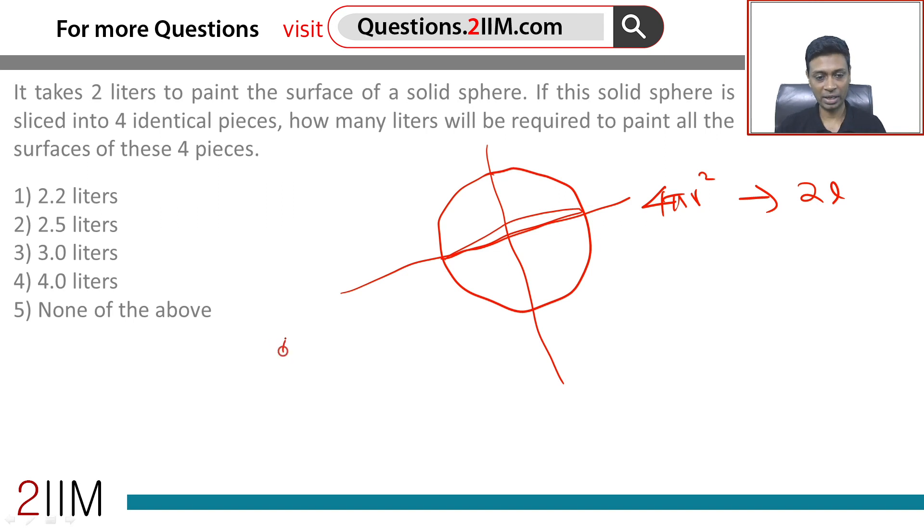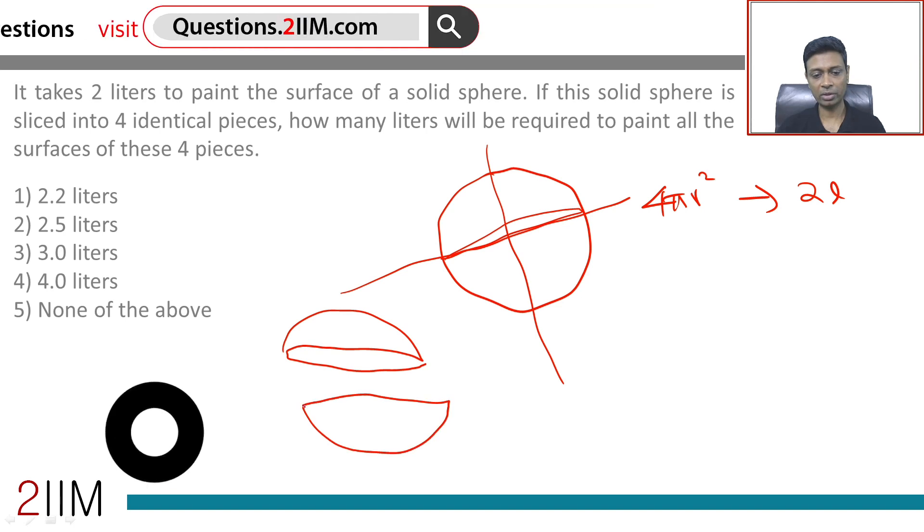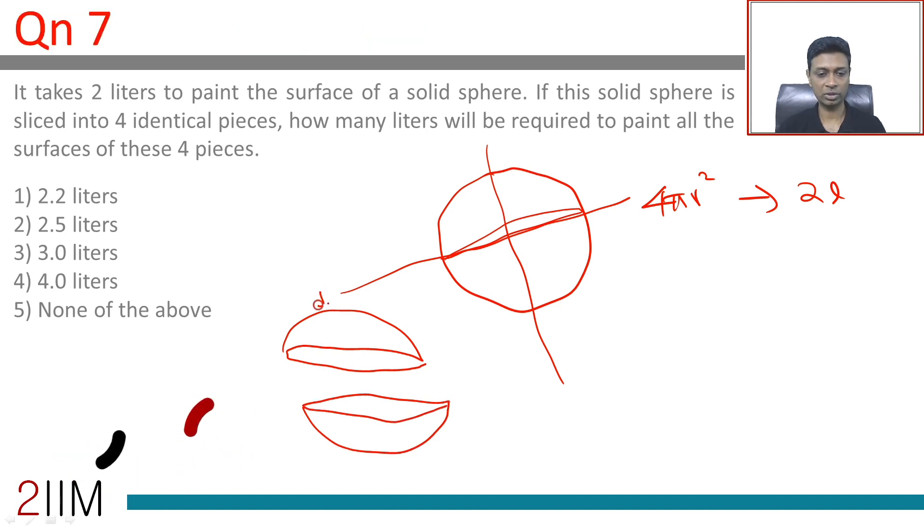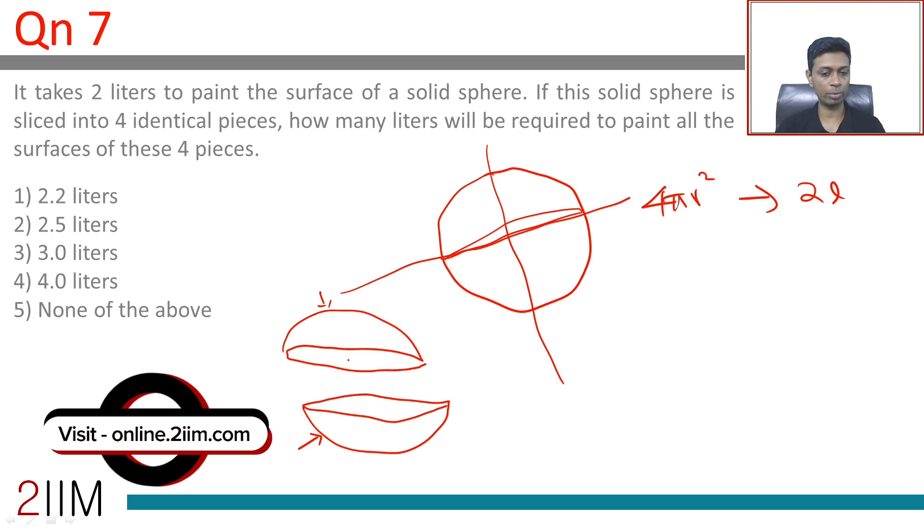Remember, we're going to cut into a hemisphere like this. Then obviously you will have 4πr² as the area. This plus this accounts for 4πr², but we have this as well and this as well. This is πr², this is πr².